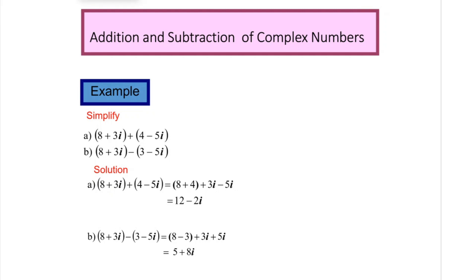We can simplify two or more complex numbers by adding and subtracting. For example, simplify (8 + 3i) + (4 − 5i). For the real part: 8 + 4. For the imaginary part: 3i − 5i. Simplifying gives the final answer.